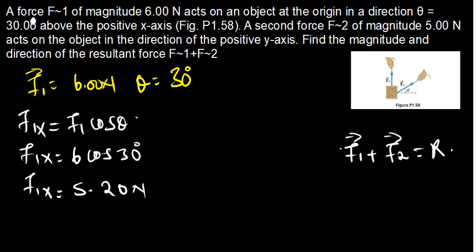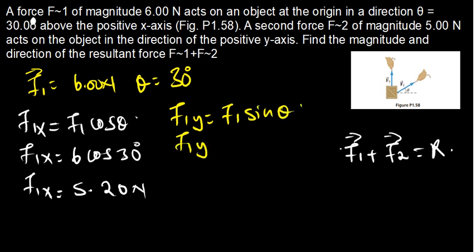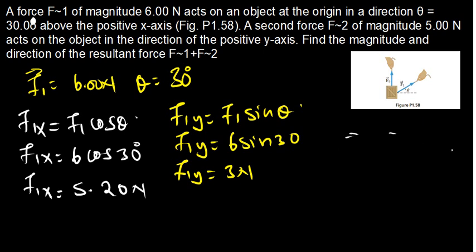Now for the y component of F1, we use F1y = F1 sin theta. So F1y = 6 sin 30, which gives us 3. So our F1y is equal to 3 Newtons. That is the x component and y component of F1.